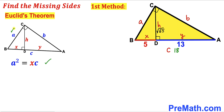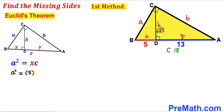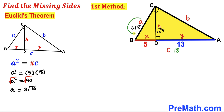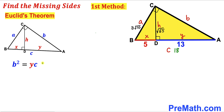Now let's recall Euclid's second theorem: a squared equals the product of segment x times the whole side length c. In our case x is 5 and c is 18, so a squared equals 5 times 18, giving us a squared equals 90. Taking the square root on both sides, our value of a turns out to be 3 times the square root of 10.